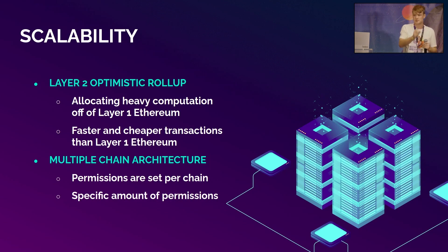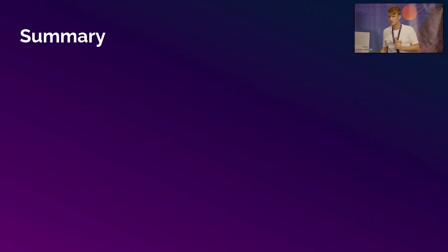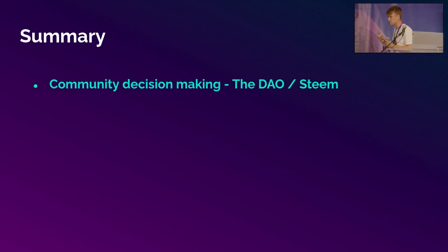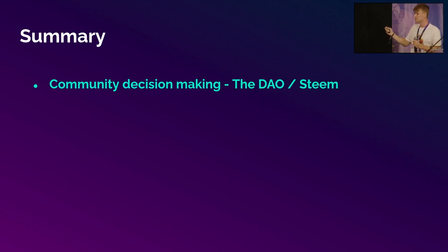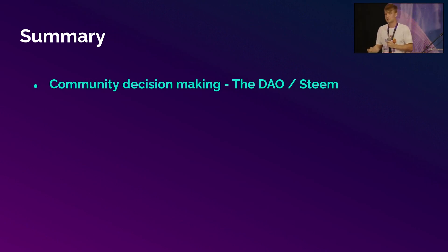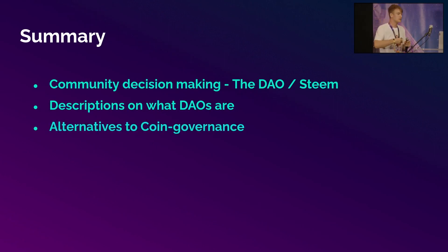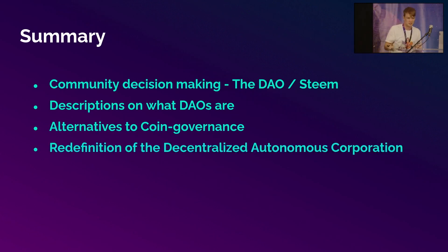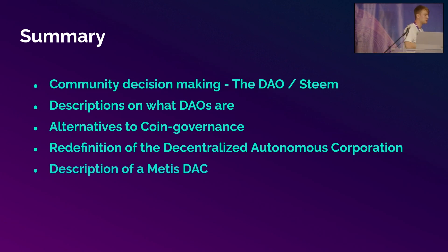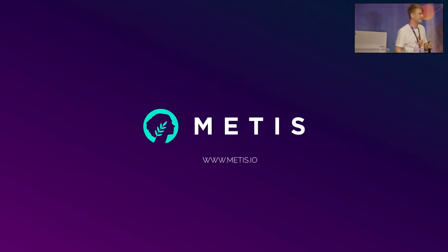We also introduce a multiple-chain architecture, which allows permissions to be set on a per-chain basis with specific amounts of permissions for your chains. In summary, we took a look at the community decision-making system — the DAO and Steam — and how it was the community that came and made the decision to fork, leading to good results. We talked about descriptions of what DAOs are, alternatives to coin governance (in this case, trust), a redefinition of the Decentralized Autonomous Corporation, and how METI's Decentralized Autonomous Corporation looks. This is the end of the presentation — thank you.